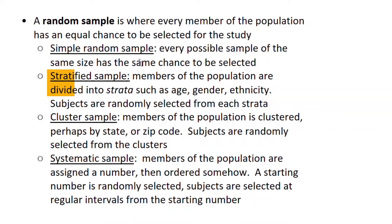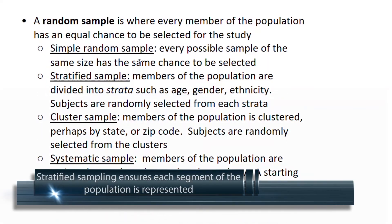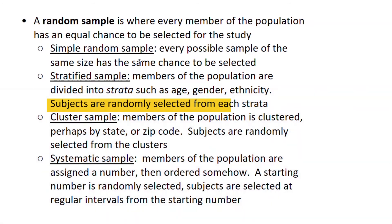We might also need to do a stratified sample if we have members of the population that are divided by, let's say, age. We might divide the population into young adults, middle-aged, and elderly, and then we'd want to take a random sample from each one of those groups to ensure that we have adequate representation from each of the groups or strata.